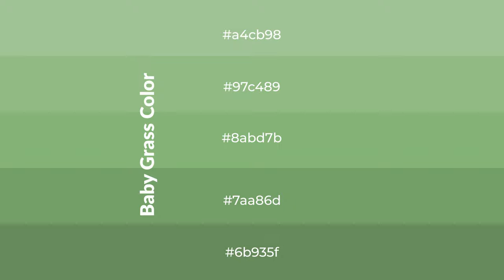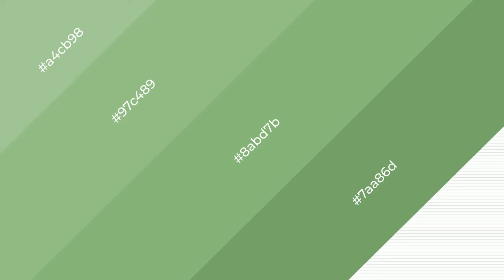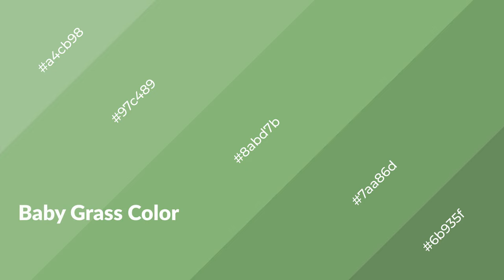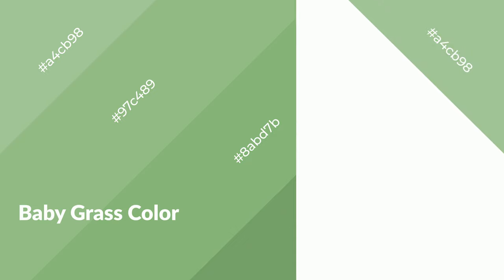To generate shades of a color, we add black to the color. Shades are used in patterns, 3D effects, and layers, and they create depth and drama. Baby grass is a cool color and it emits calming, serene, soothing, refreshing, spacious, unwinding, peaceful, and relaxed emotions.